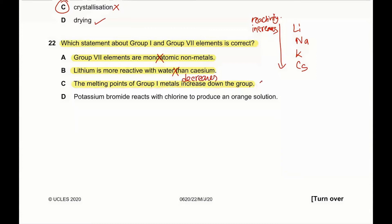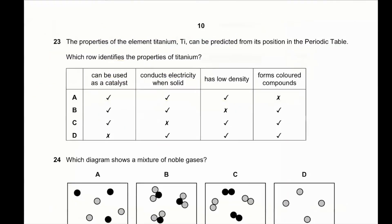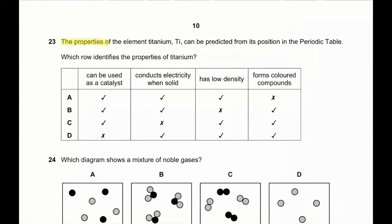Potassium bromide reacts with chlorine to produce an orange solution — this is correct. If we have KBr and react it with chlorine, a displacement reaction takes place: it forms 2 potassium chloride and bromine (Br₂ aqueous) is released, which has an orange color. So D is the correct answer for question 22.